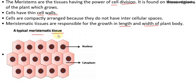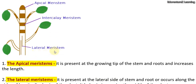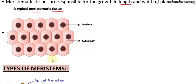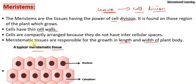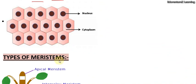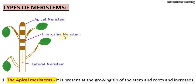Meristematic tissue is divided into three parts based on location: apical meristem, intercalary meristem, and lateral meristem. Which tissue helps growth in length and which helps growth in width, we will discuss that. Meristematic tissues are plant tissues made from plant cells, and they help in the growth of the plant's length and width.